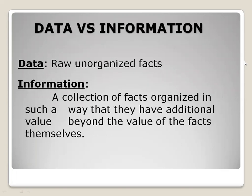Data versus information. Data is nothing but an unorganized collection of facts. For example, if someone investigates you and you provide your family details verbally, whatever is written down on paper is raw data. When this data is entered into a computer system with the help of certain software or hardware, it becomes information. Data and information are vice versa to each other.